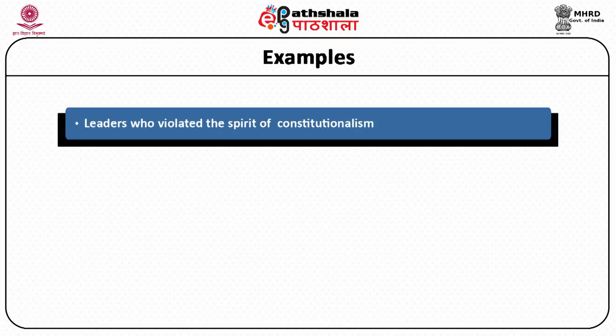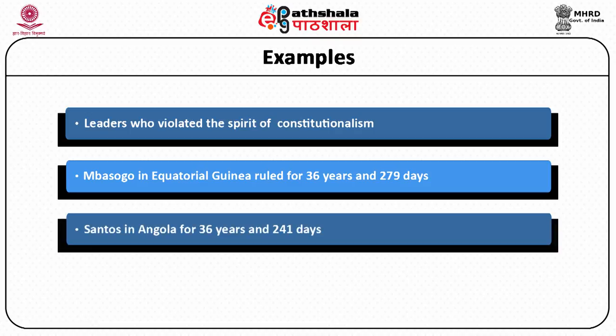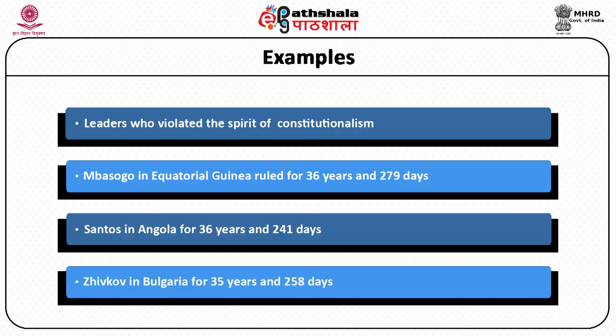All these dictators who violated the spirit of constitutionalism, who paid no heed to the rule of law and ruled by force, manipulation, violence, and repression — how could they remain in power for such long periods? It was by force and coercion. We have the example of President Mbasogo of Equatorial Guinea, who stayed in power for 36 years and 279 days. President Santos in Angola stayed in power for 36 years. President Zhivkov in Bulgaria ruled for 35 years and 258 days. Staying in power by brushing aside the constitution is only possible when you suppress the voice of the people — which is suppressing constitutionalism itself.